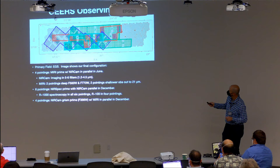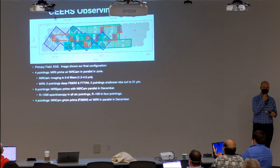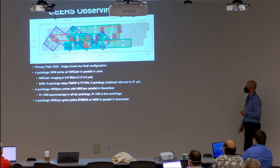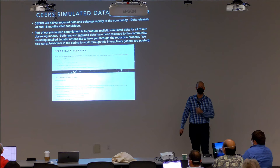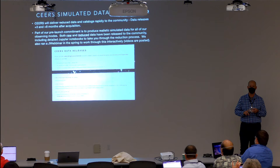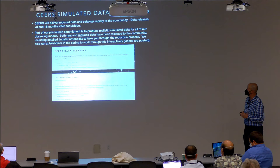NIRSpec will cover 1–5 microns: chemical composition, ionization, and redshifts using R~1000 in all three gratings and R~100 prism. We'll also do four NIRCam slitless grism pointings with the F356W filter for 3–4 micron spectroscopy at R~1500 across the full field — very different from the low-resolution HST WFC3 grism. One serendipitous emission line at redshift 6.103 has already been detected in a calibration pointing. Simulated data and reduction notebooks are available at ceers.github.io.